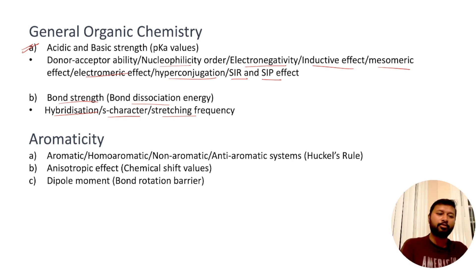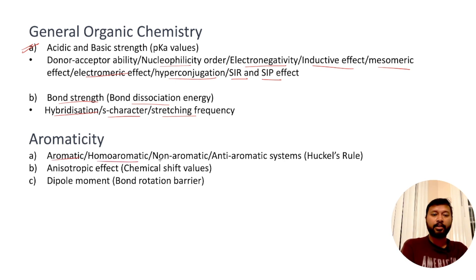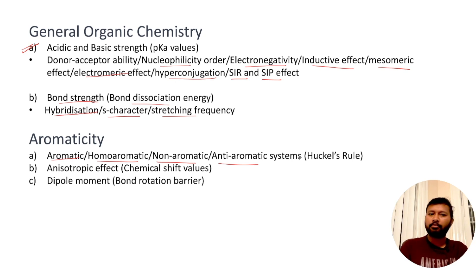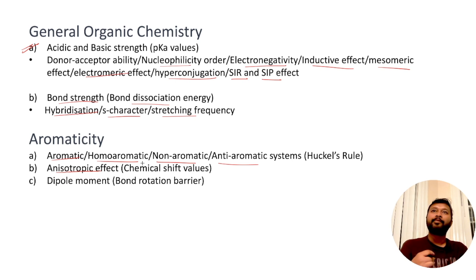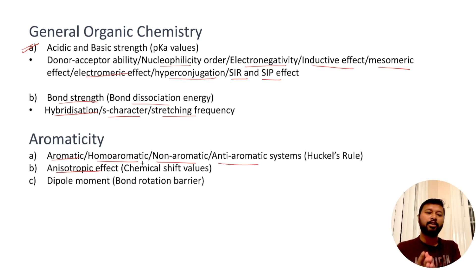Aromaticity is a topic that has been very frequently asked — it is asked every single time. You need to understand how to find out whether a molecule is aromatic, homoaromatic, non-aromatic, or anti-aromatic. Most questions are done on the basis of Hückel's rule. I have made a video on that, I will give you the link in the description. There is also the concept of anisotropic effect — how it affects chemical shift values in NMR spectroscopy.